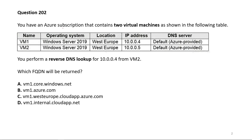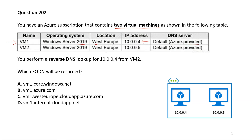Question 202: You have an Azure subscription that contains two virtual machines. VM1 has Windows Server 2019, is hosted in West Europe, with local IP address 10.0.0.4, and DNS server provided by Azure. VM2 also runs Windows Server 2019, hosted in West Europe, with local IP address 10.0.0.5, also using Azure DNS. You perform a reverse DNS lookup — an nslookup command — for 10.0.0.4 from VM2. Which fully qualified domain name will be returned? Let's see this practically using the Azure portal.